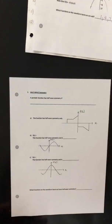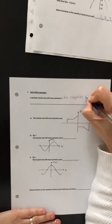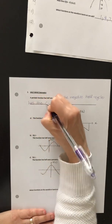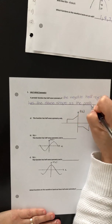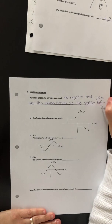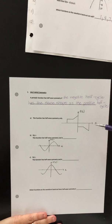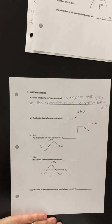The last kind of symmetry that we're going to concern ourselves with is called half wave symmetry. A periodic function has half wave symmetry if the negative half cycle has the same shape as the positive half cycle. If this piece is flipped over the horizontal axis only, it would look exactly like the piece to its left. That is a test for half wave symmetry.